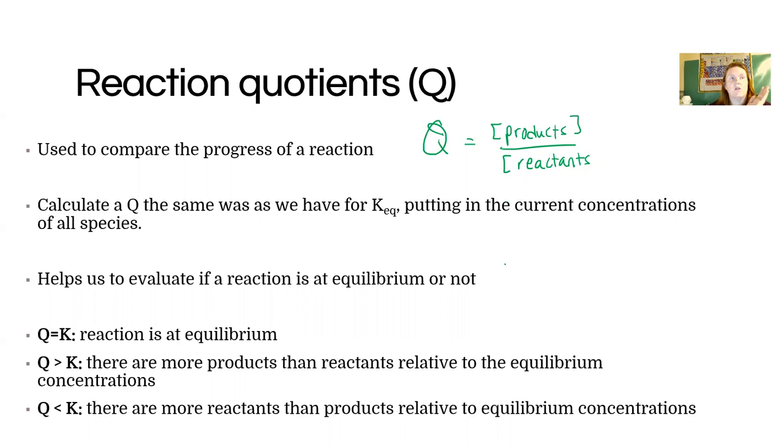The difference is we can use Q when we're not positive if it's actually an equilibrium position or not. Say we just get a bunch of concentrations and the question is, is this at equilibrium? What you do is find the value for Q, because you don't know it's an equilibrium, and you'll compare to a reference K. If Q and K are equal to each other, then it was an equilibrium all along.